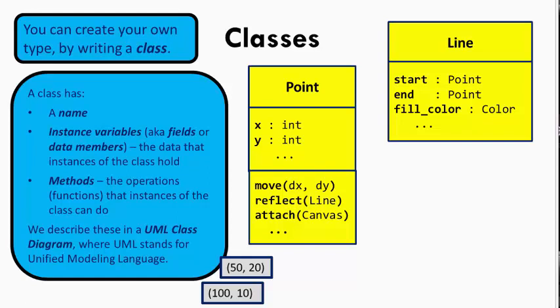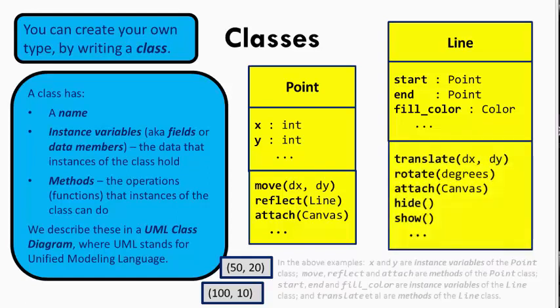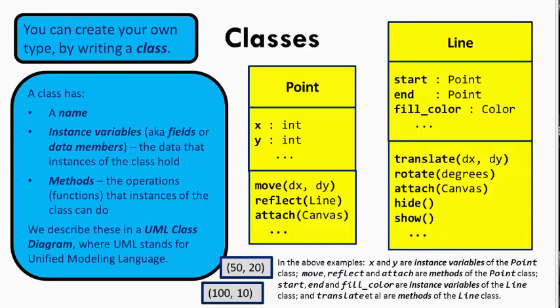What methods do you think a line should have? That is, what do you think a line ought to be able to do? Pause for a moment to decide. The designer of this line class chose to allow a line to do similar things to that which a point can do, plus also things like hiding and showing itself. Again, it is all up to the designer of the class.